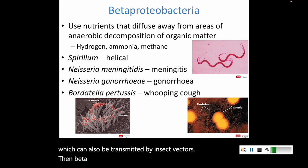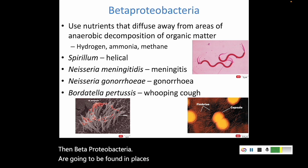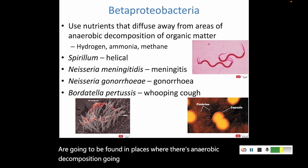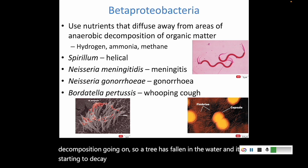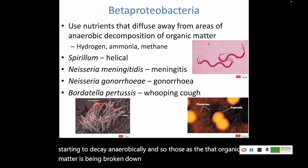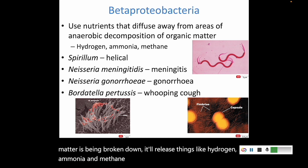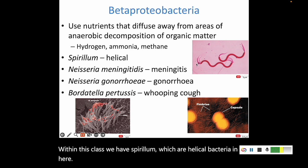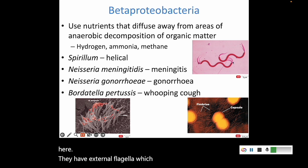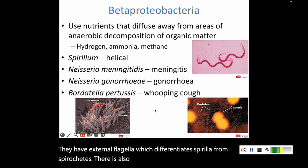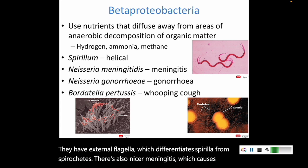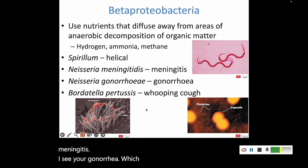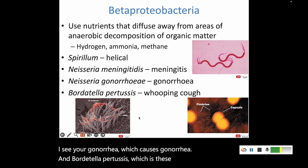Beta proteobacteria are found in places where there's anaerobic decomposition going on — for example, a tree that has fallen in the water and is starting to decay anaerobically. As that organic matter is broken down, it releases things like hydrogen, ammonia, and methane, and the beta proteobacteria will use those. Within this class, we have Spirillum, which are helical bacteria with external flagella, differentiating them from spirochetes. There's also Neisseria meningitidis, which causes meningitis; Neisseria gonorrhoeae, which causes gonorrhea; and Bordetella pertussis, which causes whooping cough.